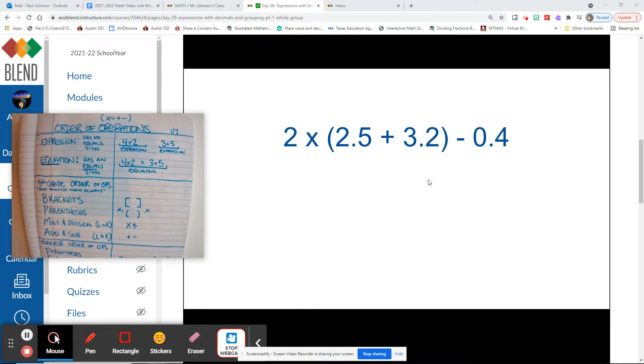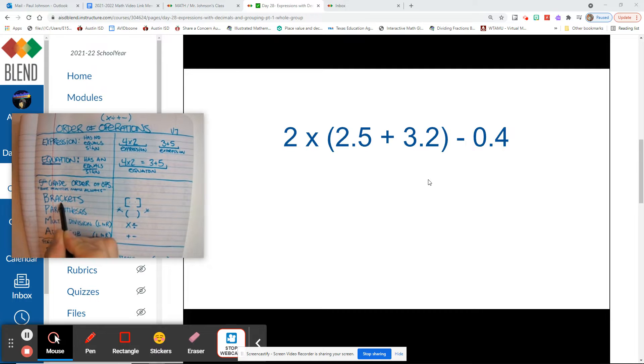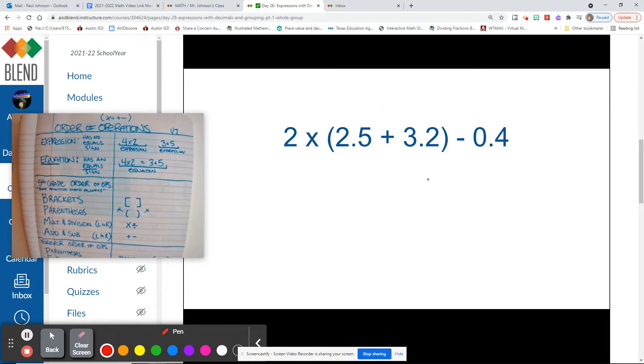Alright, so we have a grouping symbol, so if we go ahead and use the method that we've used in class, put on our bracket goggles, do we see any brackets? No. Put on your parentheses goggles, do you see any parentheses? Aha, so basically we're acting like we can only see what's in parentheses right now.